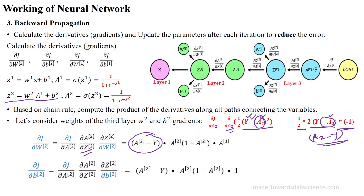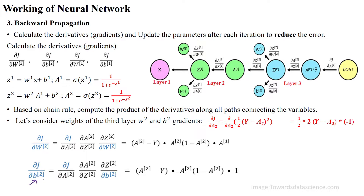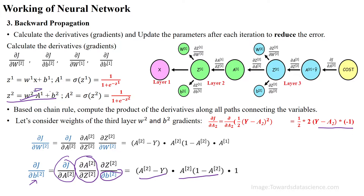For ∂a2/∂g2, applying partial differentiation gives a2 × (1 − a2). For ∂z2/∂w2, applying partial differentiation gives a1. For the bias b2, starting from ∂J/∂a2 giving (a2 − y), then ∂a2/∂g2 giving a2(1 − a2), and ∂g2/∂b2 — the w2 term becomes 0 and the bias term becomes 1.